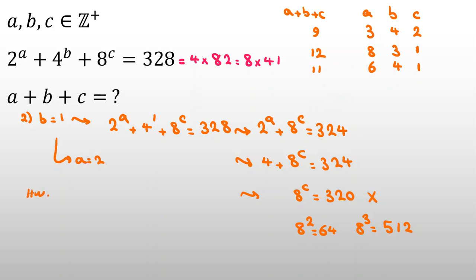Here's a homework problem: try to solve 2 to the A plus 4 to the B plus 8 to the C equals 518, where A, B, C are positive integers, and find A plus B plus C. Comment your answers below. If you have questions, send a message to my WhatsApp number. Please don't forget to subscribe, turn on the bell, and like the video. Thanks, see you next time, bye-bye.